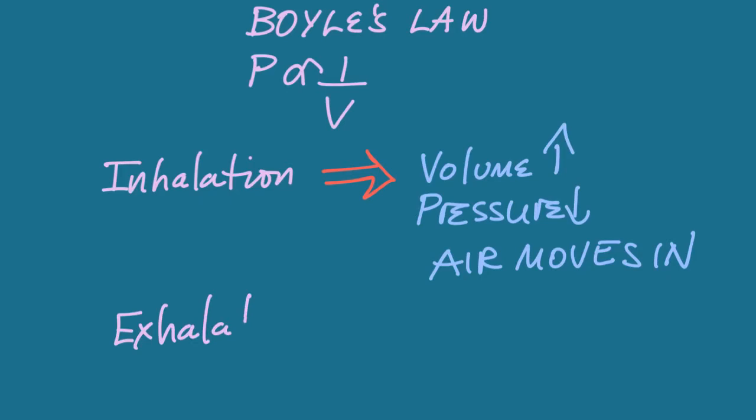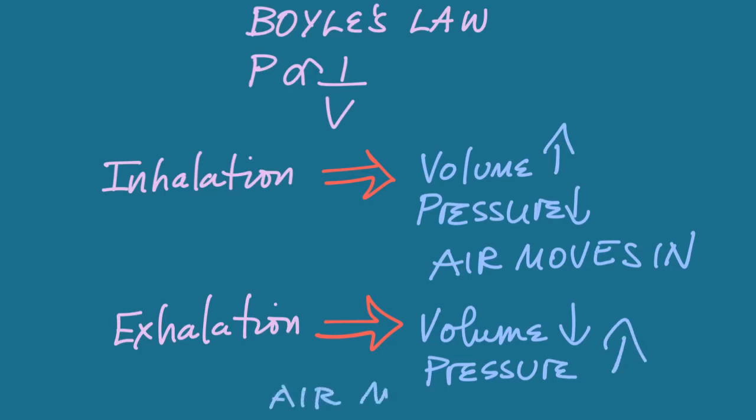During exhalation, the opposite happens. The volume inside the thoracic cavity goes down. The pressure goes up. And as a result, air is forced out of the thoracic cavity, down its pressure gradient.